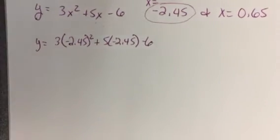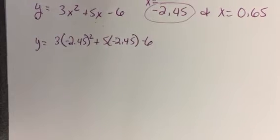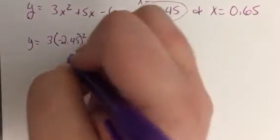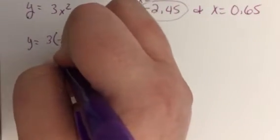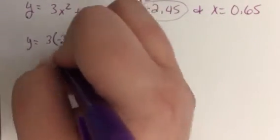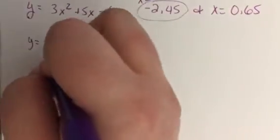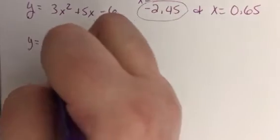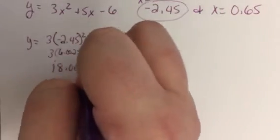Okay, so since we do have the calculators handy, I am going to use my calculator. So I'm going to put in 2.45 and square it. And I get 6.0025. And then I'm going to multiply that by 3. And I get 18.0075.